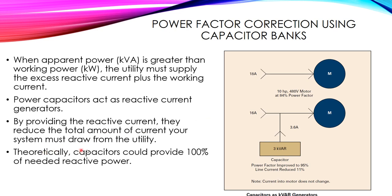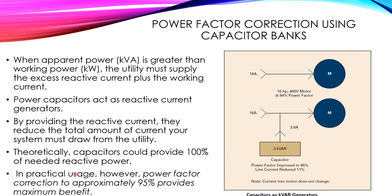Theoretically, capacitors could provide 100 percent of the needed reactive power, so we can use capacitors to achieve a unity power factor. However, in practical usage, power factor correction to approximately 95 percent provides the maximum benefit for our system, and we don't need to increase beyond this value.